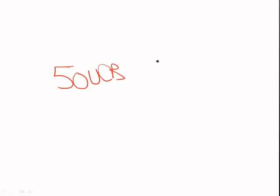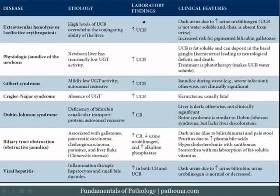To illustrate: if the reticuloendothelial system produces more unconjugated bilirubin than the liver can conjugate, you'll see excessive unconjugated bilirubin within the blood. This unconjugated bilirubin is not water-soluble, so it can't leak out in the urine — it just floats around until the liver conjugates it. As the liver conjugates all this bilirubin, you get excessive conjugated bilirubin within the bile, increasing the risk for pigmented gallstones.